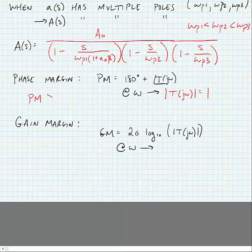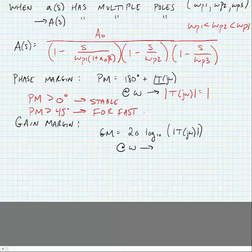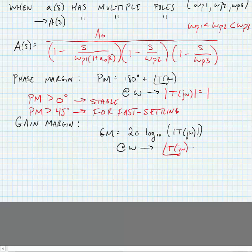An op amp is stable if the phase margin is greater than zero. Typically, we desire the phase margin to be greater than 45 degrees for fast settling. We have one term that is used less frequently called gain margin, and this is 20 log base 10 times the magnitude of the loop gain at a frequency where the angle of the loop gain T(jω) is equal to plus or minus 180 degrees.